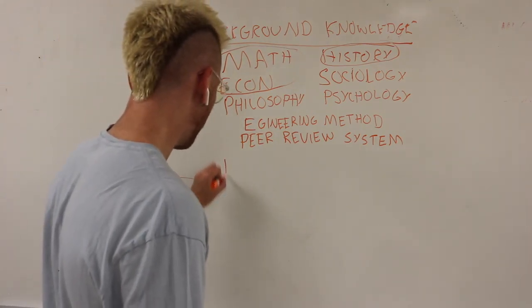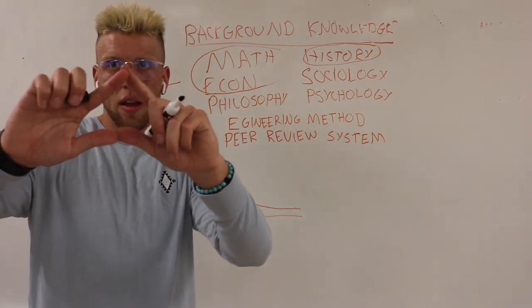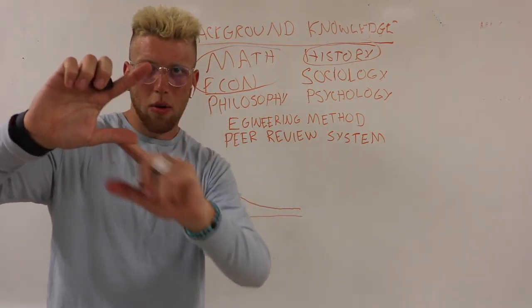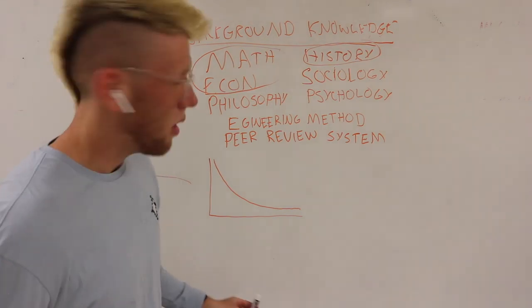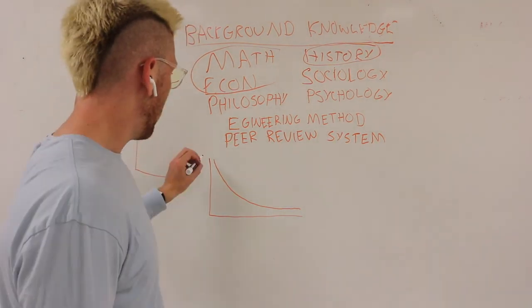So, remember what we learned about the shape of hierarchies? That very few people occupy the top, and most people are here at the bottom. This phenomenon can be explained mathematically by the Pareto distribution.